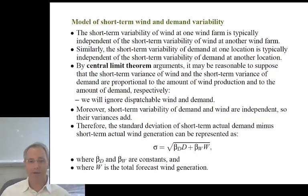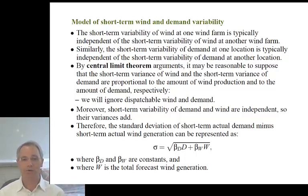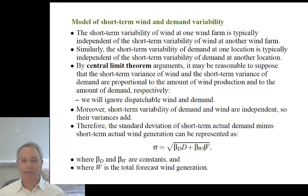Since wind and demand are independent, their variances add. The standard deviation sigma of short-term actual demand minus short-term actual wind generation equals the square root of the sum of variances. We model the variance of demand as proportional to demand D with constant B_D, and the variance of wind production as proportional to total wind forecast W with constant B_W. So sigma equals sqrt(B_D * D + B_W * W).